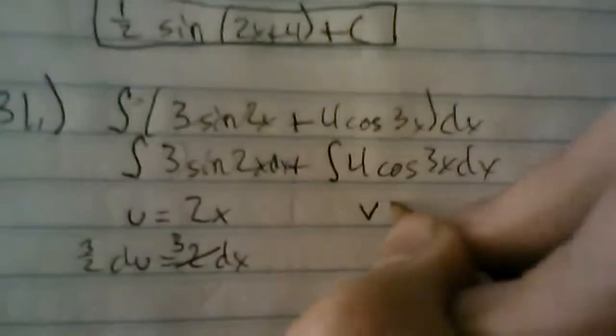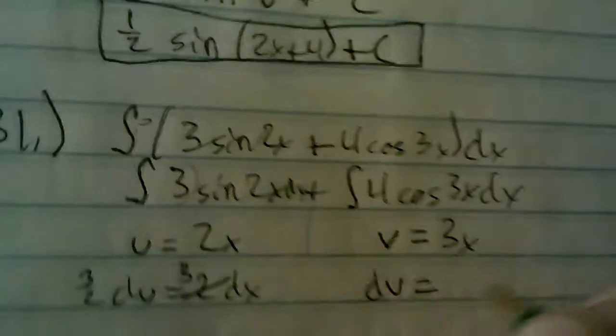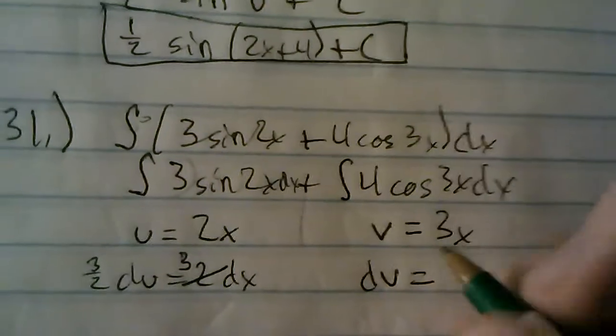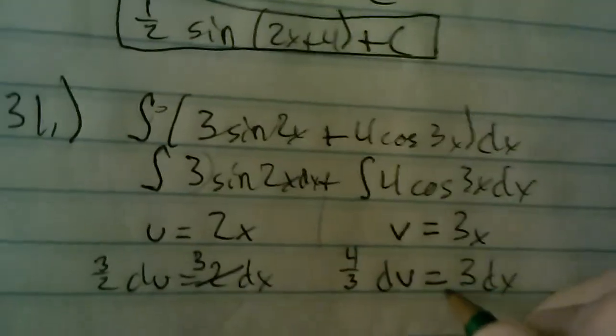And now we can plug in three halves du instead. So, now that we have that, we're going to focus on the other one. v equals 3x in this one. dv equals 3. But we have a 4 here. So, we're going to multiply both sides by four thirds to make 3 four.